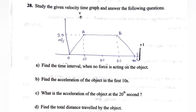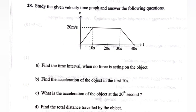Part b: Find the acceleration in the first 10 seconds. Acceleration = slope of OA = (20 - 0) / (10 - 0) = 2 m/s². Part c: What is the acceleration at the 20th second? From 10 to 30 seconds acceleration is 0, which implies at t = 20 s, acceleration = 0.